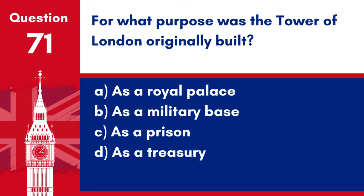Question 71. For what purpose was the Tower of London originally built? a. As a royal palace. b. As a military base. c. As a prison. d. As a treasury. Answer: a. As a royal palace. The Tower of London was originally built by William the Conqueror in the early 1080s as a royal residence and a demonstration of Norman power.